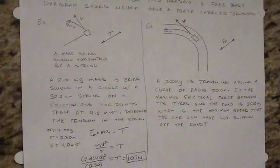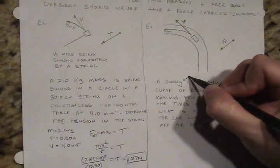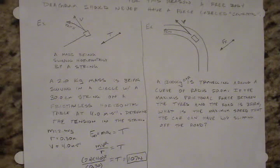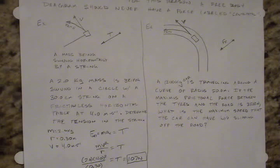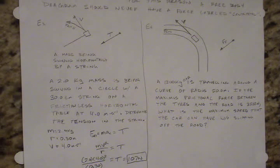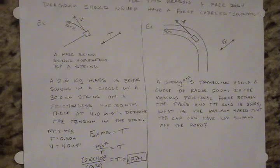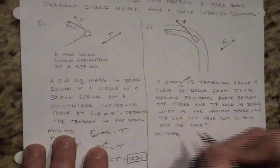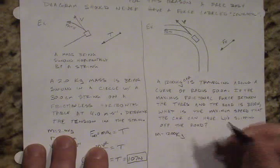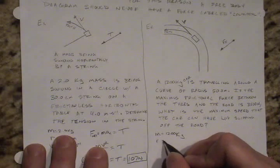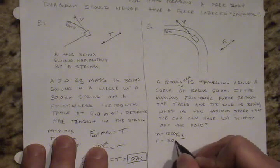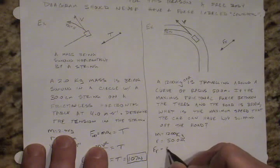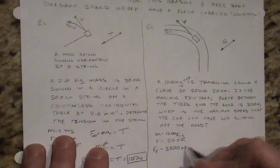So we have a 1,200 kilogram car traveling around a curve with a radius of 50 meters, and the frictional force between the tires and the road has a maximum value of 3,500 newtons. Then what is the maximum speed the car can travel without slipping off the road? Let's take a look at what we're given again. We have the mass is 1,200 kilograms, we know we have a radius of 50 meters, and we have a maximum frictional force of 3,500 newtons.